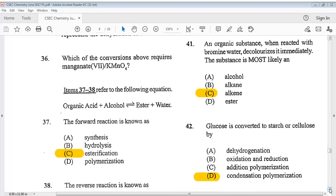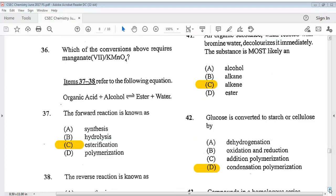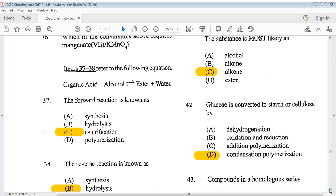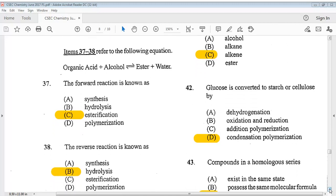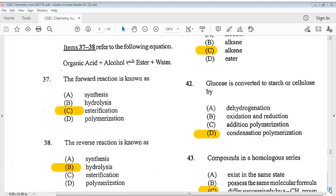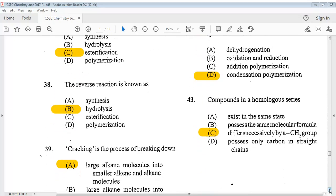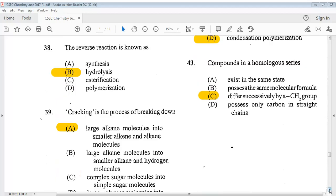Item 37 to 38 refers to the following equation. So there we have our equation. It says the forward reaction is known as C, esterification. Question 38 says the reverse reaction is known as? The answer is B, hydrolysis. Let's go on to question 39. It says cracking is the process of breaking down. A is our answer.